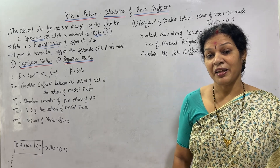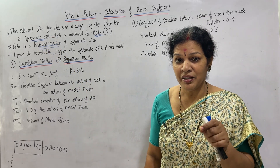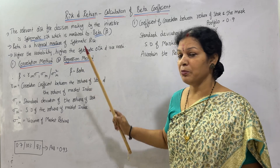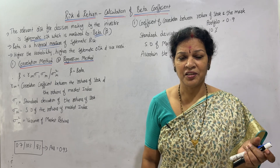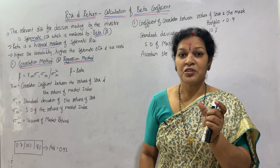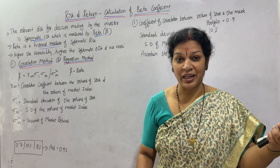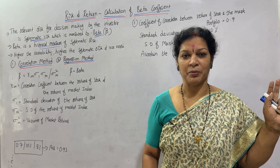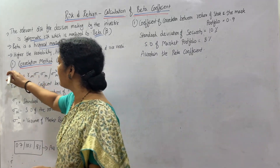Now, how do we measure this? There are two methods to calculate systematic risk, using two measures from statistics. One is the correlation method and the second one is the regression method. Correlation and regression we learned already in business statistics. The formula here is different because we are calculating risk related to the stock exchange and Sensex. Two methods: correlation method and regression method. Let us focus today only on the correlation method.